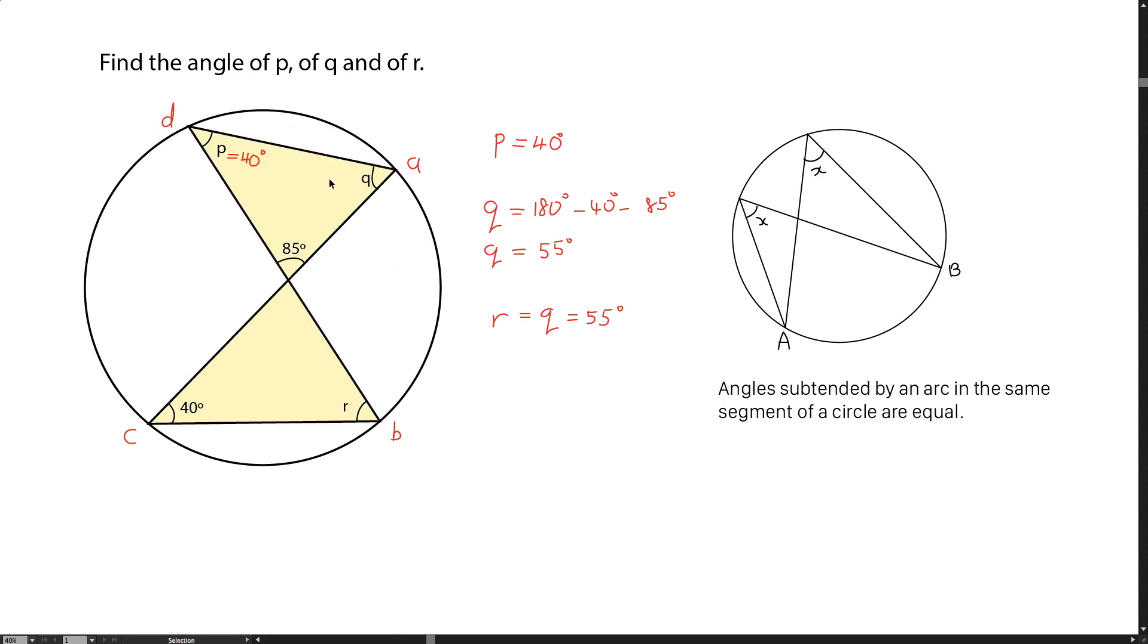I'm going to show you here. That would be Q. So C, D, R, C, D subtended to angle Q. And the same angle Q is the same as angle R here, which was subtended from R, C, D.